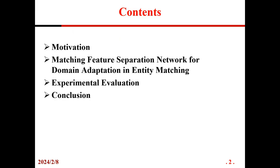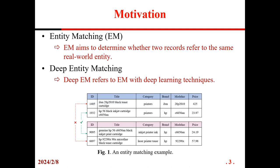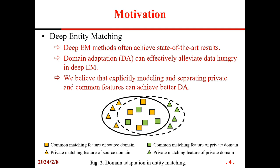The main contents are as follows. First of all, EM aims to determine whether two records refer to the same entity. Deep EM refers to solving EM tasks with deep learning techniques. Currently, deep EM methods often choose the best result. However, those methods are data hungry. Domain Adaptation can effectively alleviate this problem.